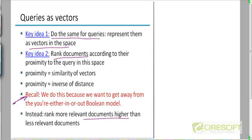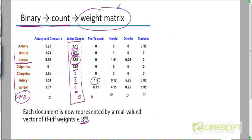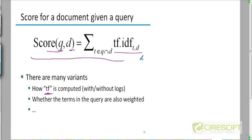So again we are going to try to come up with a scoring scheme. And in fact we already have a scoring scheme, which is that we simply add the TF-IDF weights. This was the scoring scheme we saw before we looked at this vector representation.